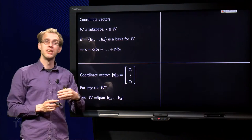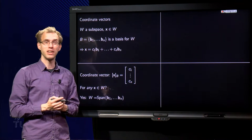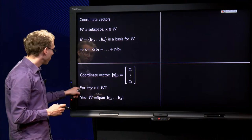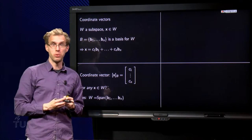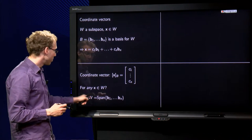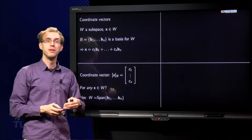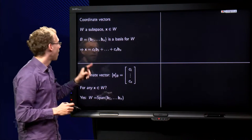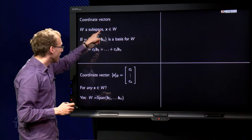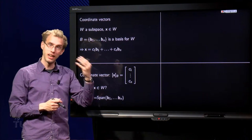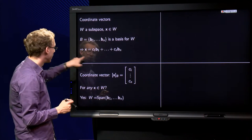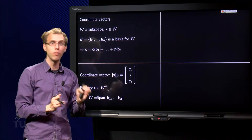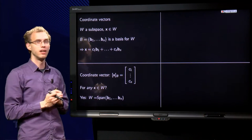Now, two questions. Can we do this for any vector x in W? And can we do it in only one way? Well, can we do it for any x in W? Yes, W is the span of b₁ up to bₙ, because this is a basis for W. And since x is in W, x is in the span, so that means that x is a linear combination of b₁ up to bₙ. So you can express x in this way for any x. You can always find a vector like this.